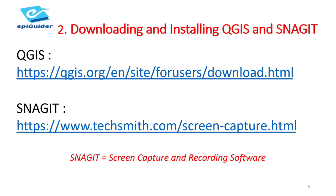Let me now show you how to download and install both software. Both the QGIS and Snagit software can be downloaded online using the links displayed. Snagit, unlike QGIS, is a screen capture and recording software. It is not free, but there is a trial version which is completely free for 15 days — just enough time for you to produce your map. All you have to do is copy the link displayed and paste it in your browser, or click the link directly from the comment section of this video.